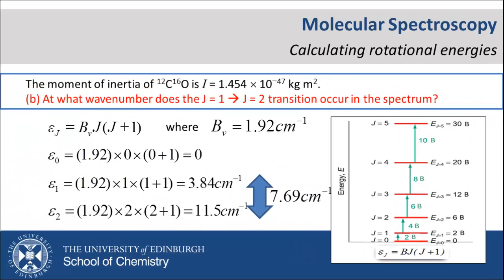Part C is a trick question, as this transition does not occur. Selection rules state that the change in delta J can only equal plus or minus 1.